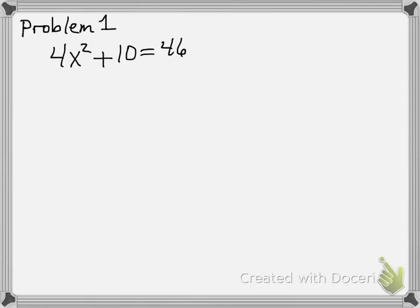The first thing we're going to work on is how to find the square root so we can find what x is. We start off with 4x squared plus 10x plus 40. Give yourself a second to write that down, and if you need to, just pause this video. We're going to start by subtracting 10 from both sides, which leaves us with 4x squared equals 36.